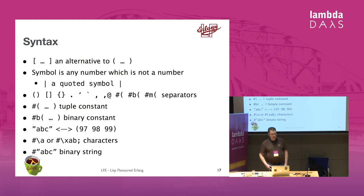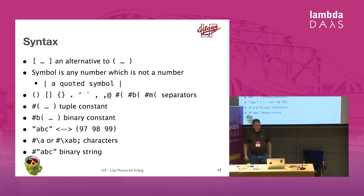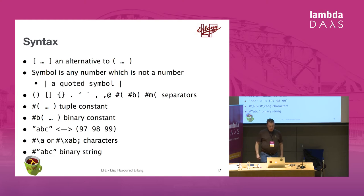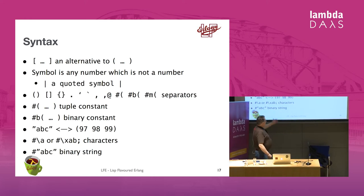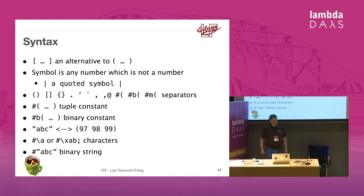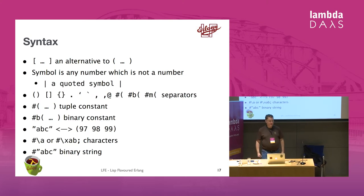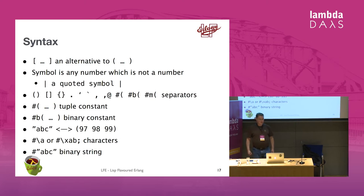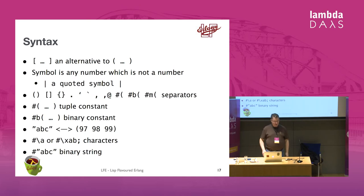The syntax is pretty straightforward basic Lisp syntax. You have parentheses for lists, and some bits borrowed from Scheme with square bracket versions. Symbols and quoted symbols are like Common Lisp, with vertical bar quoting. There are tuple constants, binary constants, and a string syntax that expands to lists of integers — the way Erlang does it, since Erlang doesn't really have strings, it has lists of code point values. There's also syntax for binary strings containing UTF-8 encoded character strings.